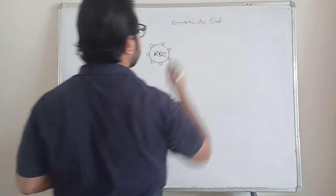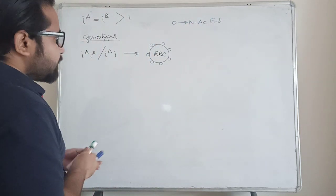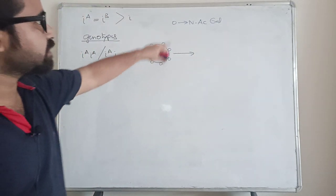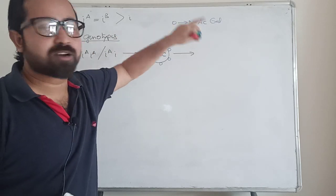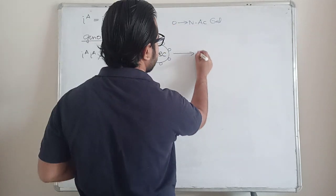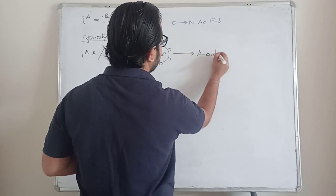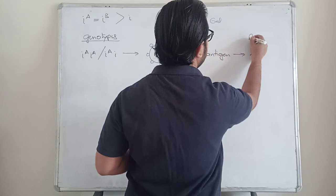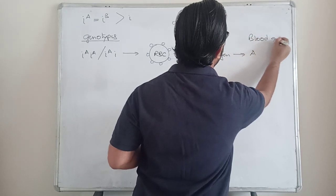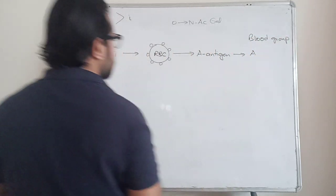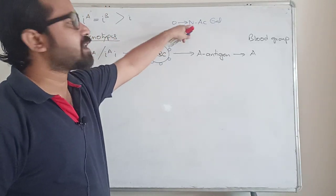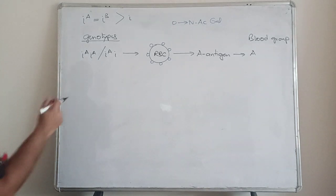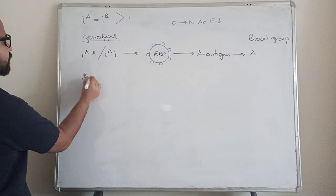So N-acetylgalactosamine is on the surface of the RBC. This is very easy to understand.